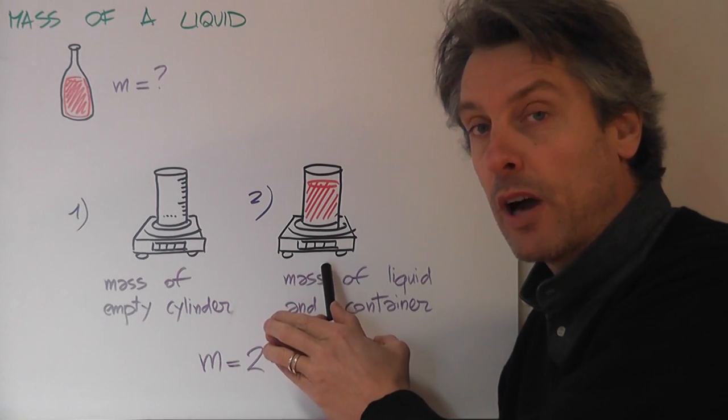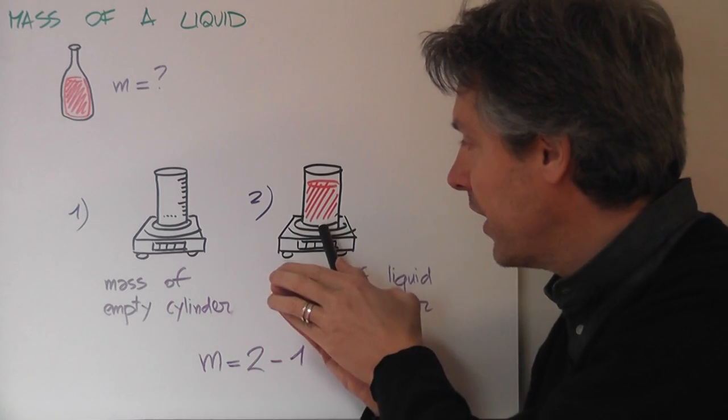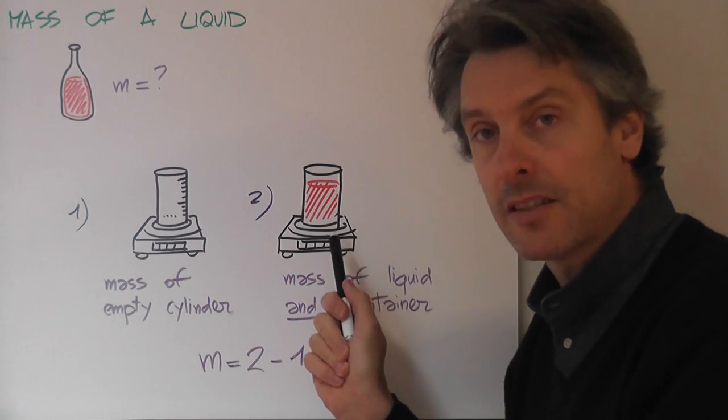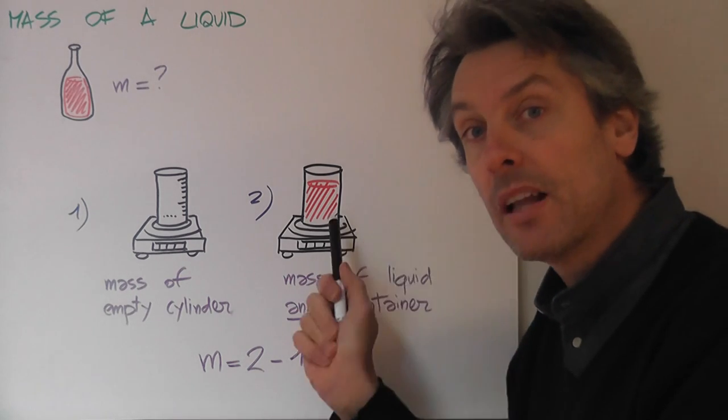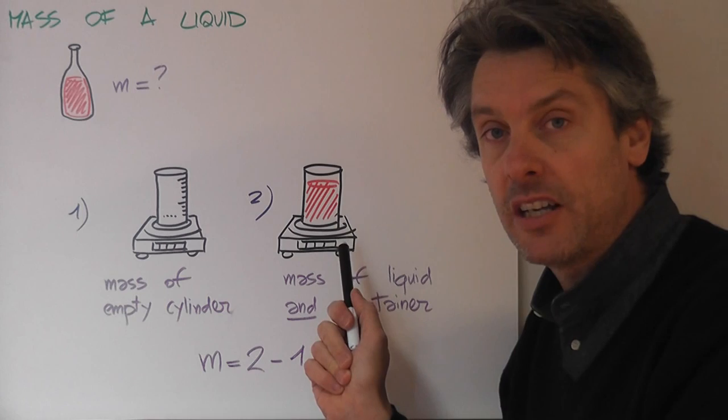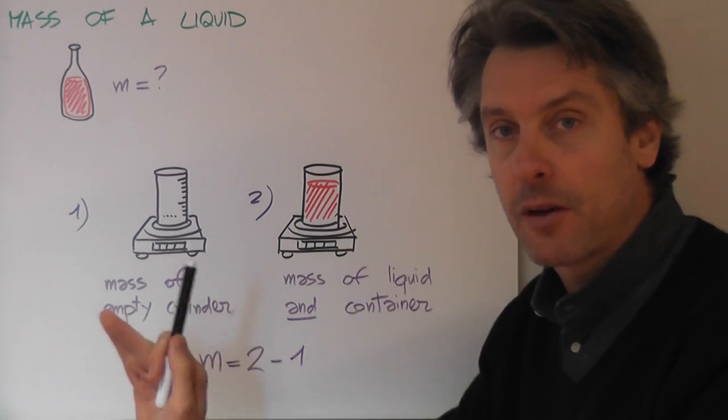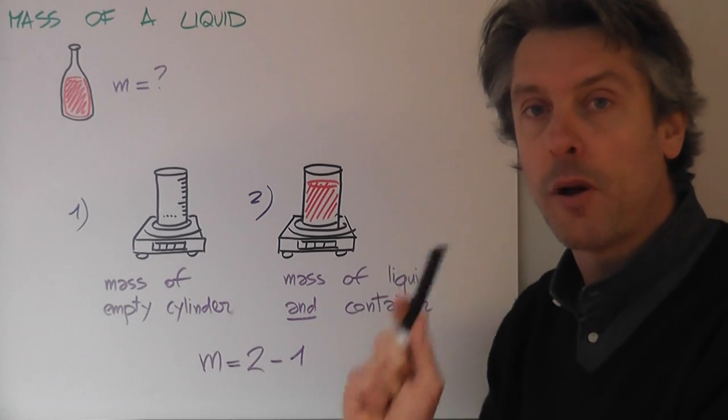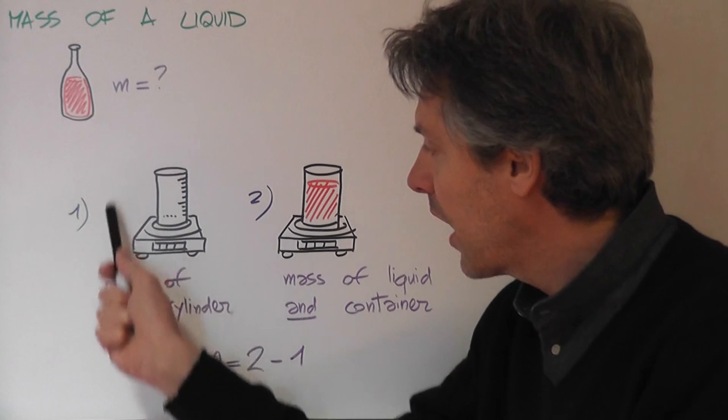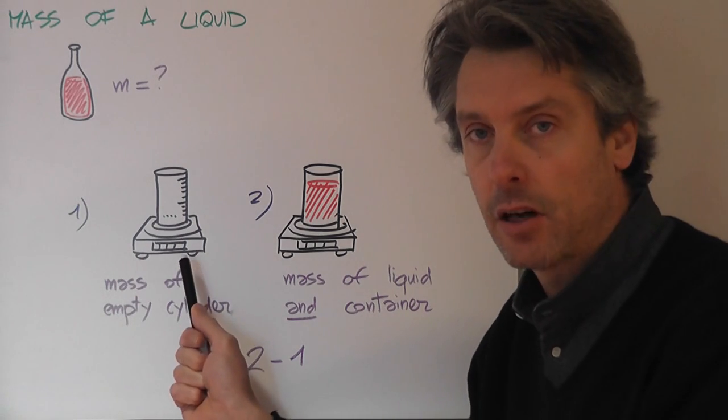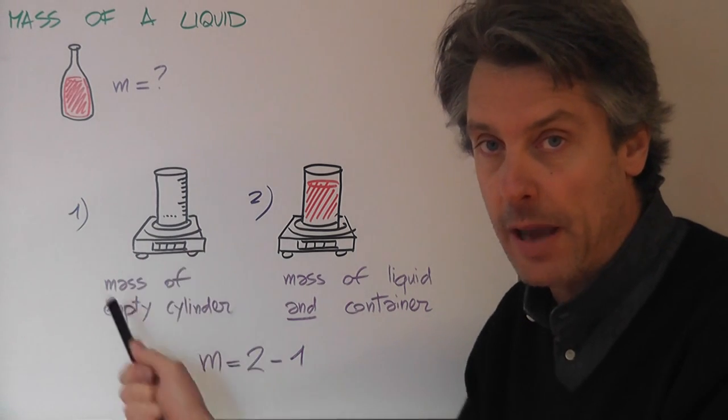But, you have to think that if you do this, your reading from a balance will be the mass of the liquid, alright, plus the mass of the container. So, you have to take that away. How you do, you have to do a measurement before that, you have to measure the mass of your empty container, of your empty cylinder.